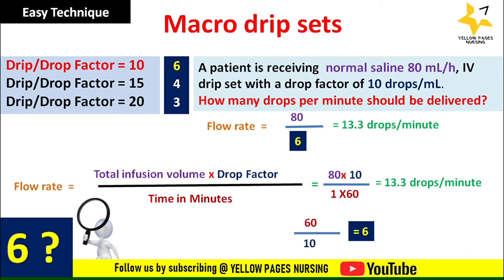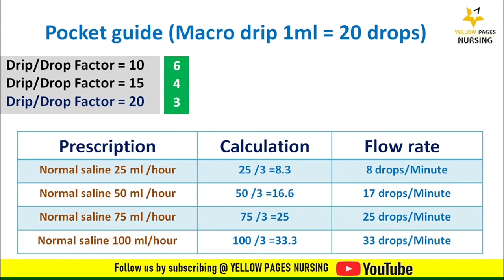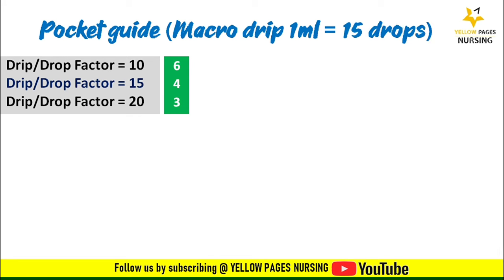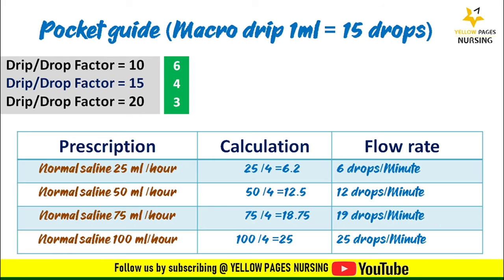Here is a pocket guide for calculating flow rate for a macro drip set with 1 ml containing 20 drops — remember the number 3 for drop factor 20. The flow rate is calculated for volumes of 25, 50, 75, and 100 ml per hour by dividing the volume by 3. Similarly, for a macro drip set with 15 drops per ml, remember number 4. Divide volumes of 25, 50, 75, and 100 ml per hour by 4 to get the corresponding flow rates.